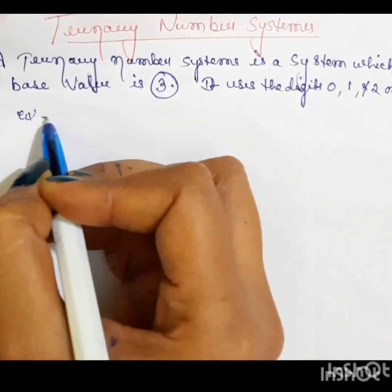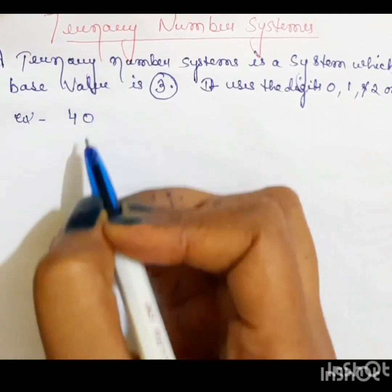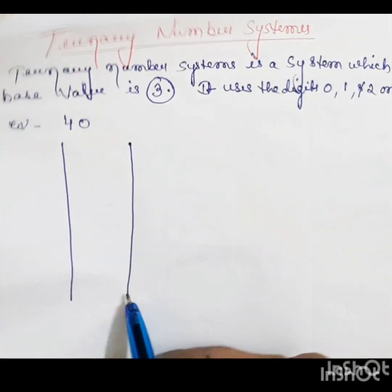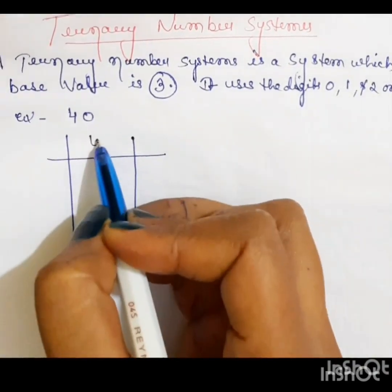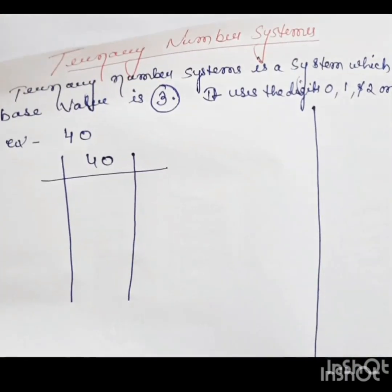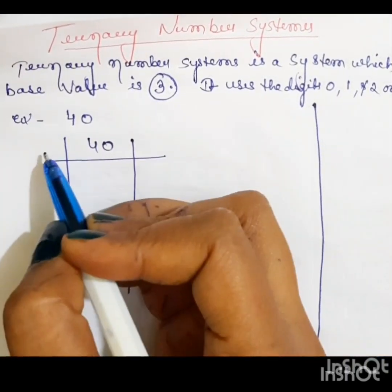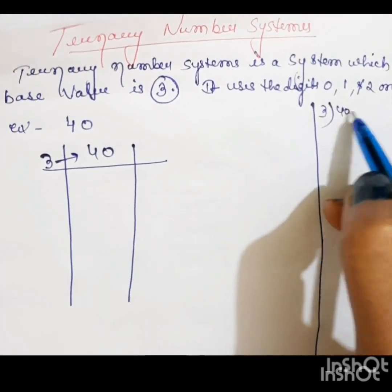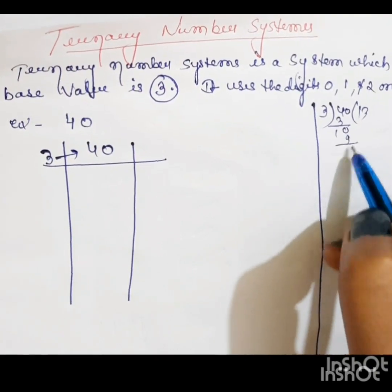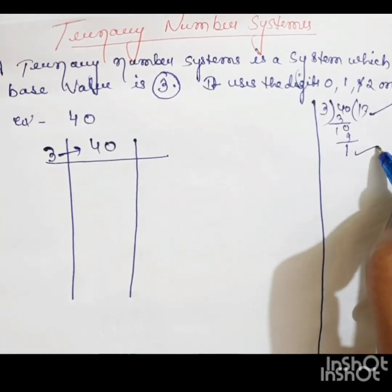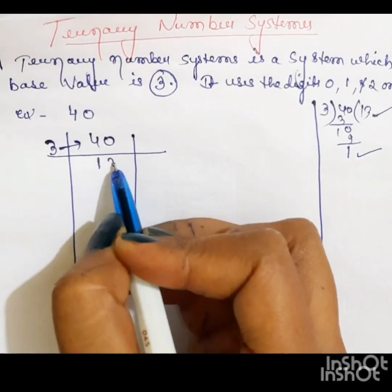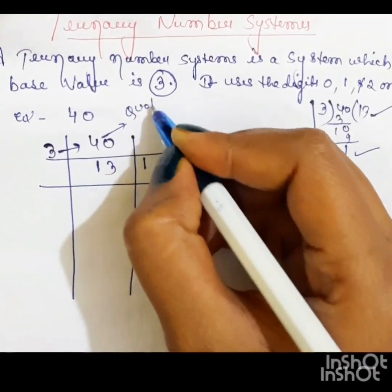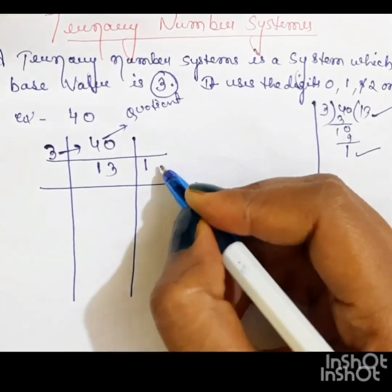Example, like 40. 3 divided 40. Here 13 is quotient. 1 is remainder. Here is quotient. Here is remainder.